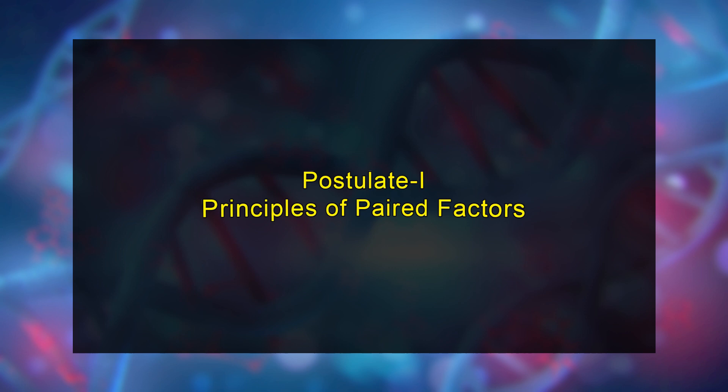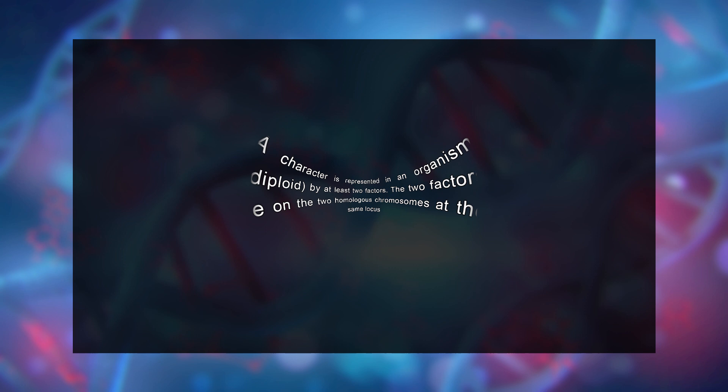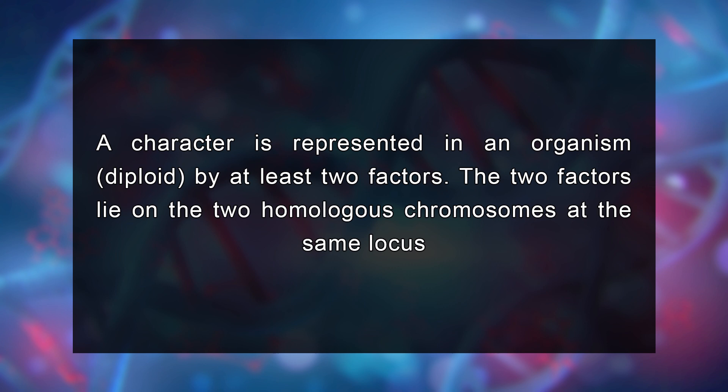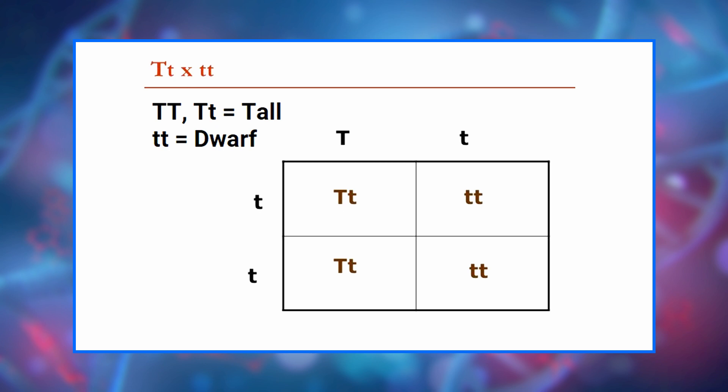Let's now discuss these postulates and principles of inheritance one by one. Postulate one: principle of paired factors. A character is represented in an organism by at least two factors. The two factors lie on two homologous chromosomes at the same locus or position. They may represent the same homologous form — capital T capital T — in case of pure tall plants, or alternate expressions (heterozygous) — capital T small t — in case of hybrid tall plants of the same character. Factors representing the alternate or same forms of a character are called alleles or allelomorphs.